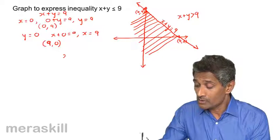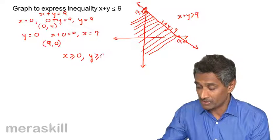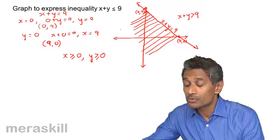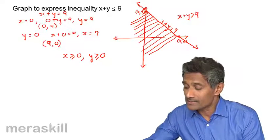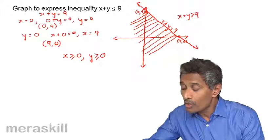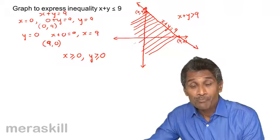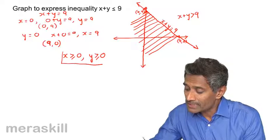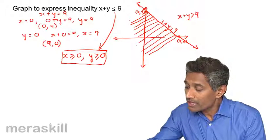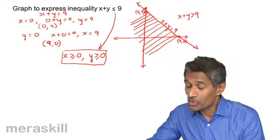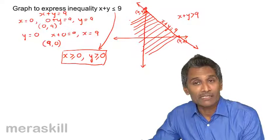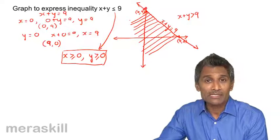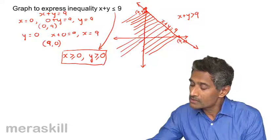Now suppose they add the additional clauses x is greater than or equal to 0 and y is greater than or equal to 0. Then we can't shade the full region — it would just be this triangle. The other regions include points with negative x or y coordinates, so adding those constraints restricts the shading to just the triangular area in the first quadrant.